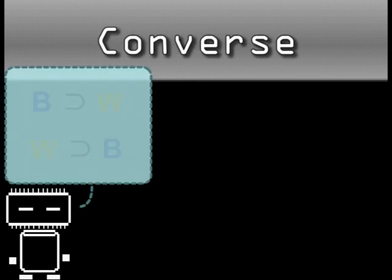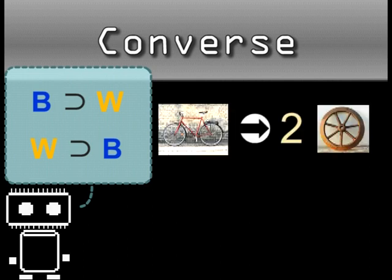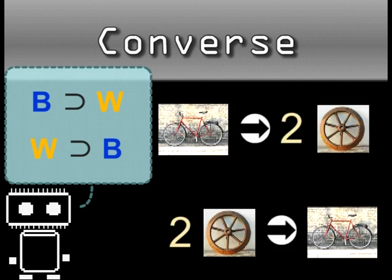The converse of, if it's a bike, then it has two wheels, switches the terms. So we end up with, if it has two wheels, then it's a bike.